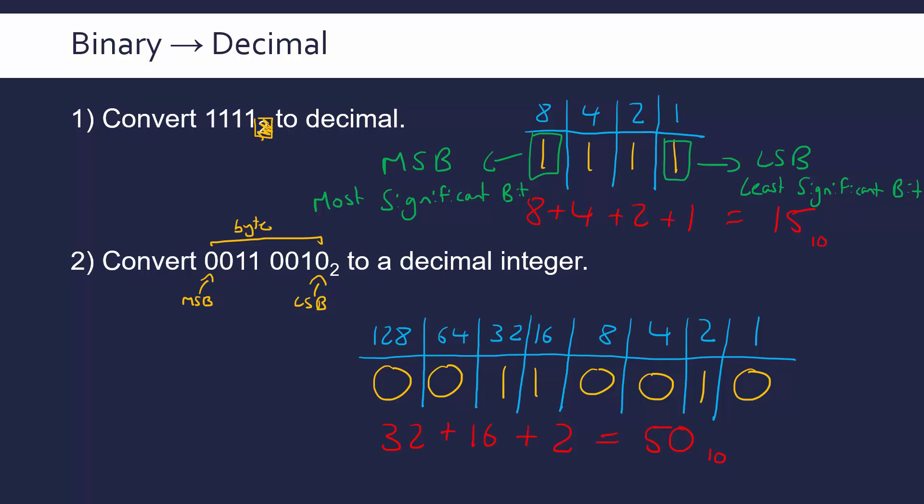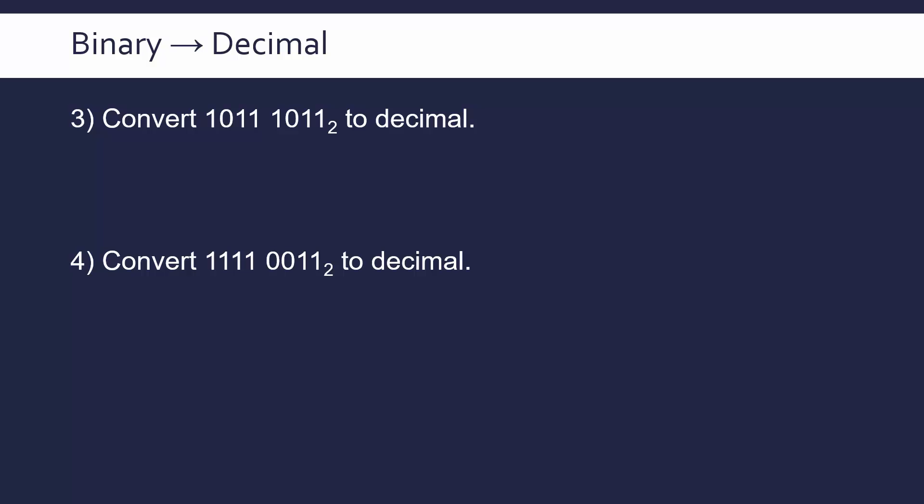Now the nice thing about this topic is you can just try these out yourself by making up numbers and practicing conversions. But if you want two questions to try, here are two more. So pause and try these to see if you've understood this. I'll show you the answers now. So the third question here, the answer is 187 and the fourth question is 243. If you tried those and got those wrong, just have another look at your maths, maybe re-watch my two worked examples.